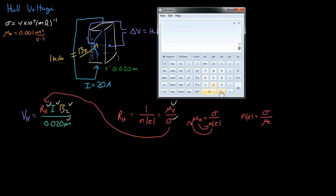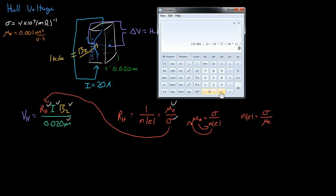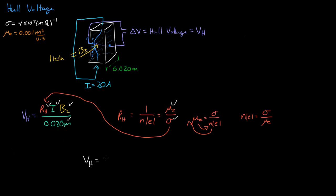So let's plug into a calculator. Mu_E is 0.001, and we divide that by 4 times 10 to the power of 7 — that's sigma. Multiply that by 20 because that's the current, multiply that by 1 because that is the magnitude of the magnetic field, and divide all that by 0.02 meters. And we get 2.5 times 10 to the negative 8. So VH is equal to 2.5 times 10 to the negative 8 volts.